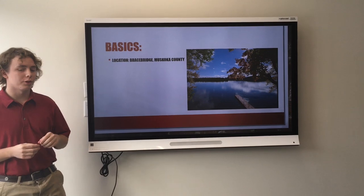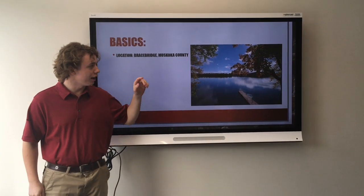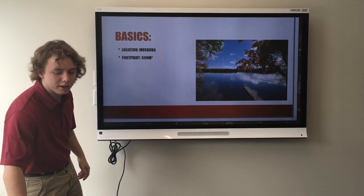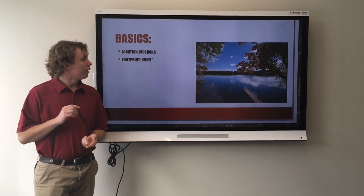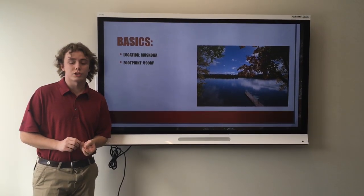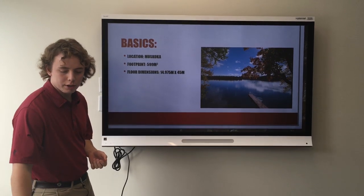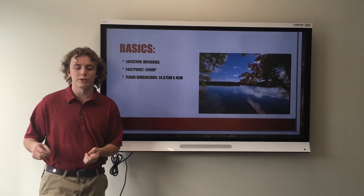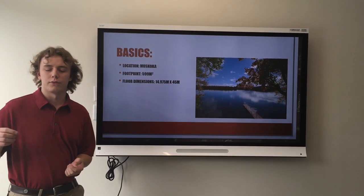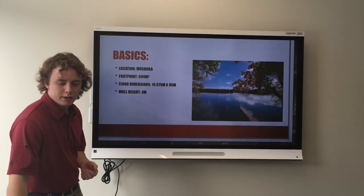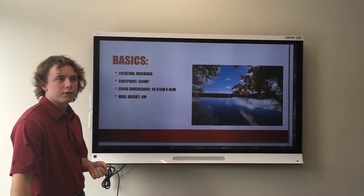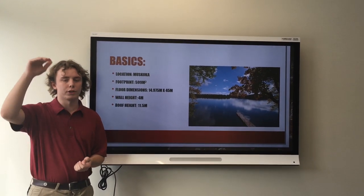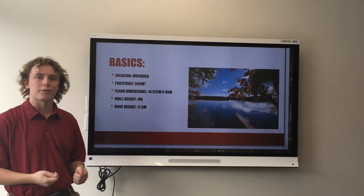Our building has been designed to go right on the edge of Muskoka Lake by Grace Bridge. It has a footprint of 599 meters squared, a floor dimension of 14.975 meters by a length of 45 meters, a wall height of 4 meters with a total height from the bottom of the building to the top of the truss of 11.5 meters.